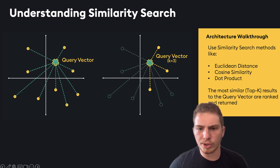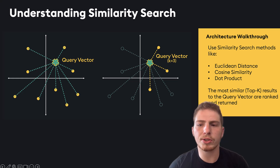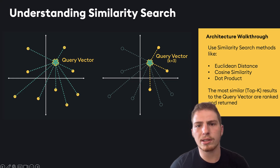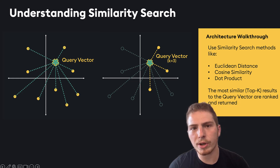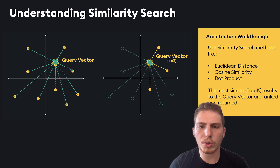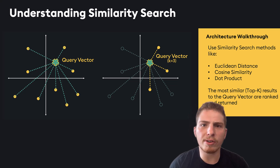The goal of similarity search is to find the top K closest documents to your query vector, though the documents returned in practice can differ depending on the similarity search method used. Options include Euclidean distance, cosine similarity, and dot product. Euclidean distance is the straight-line distance between two vectors — it's very intuitive but can have lower performance at higher dimensions. Cosine similarity looks at the cosine of the angle between two vectors; it focuses on orientation rather than magnitude, making it very effective at higher dimensions.